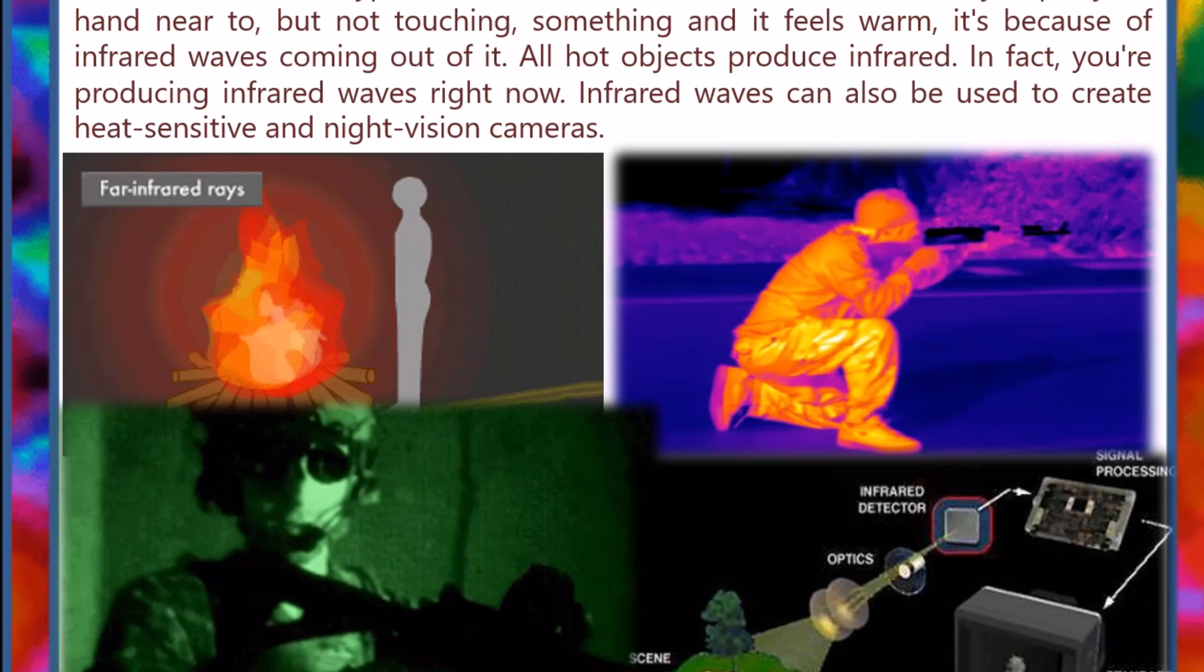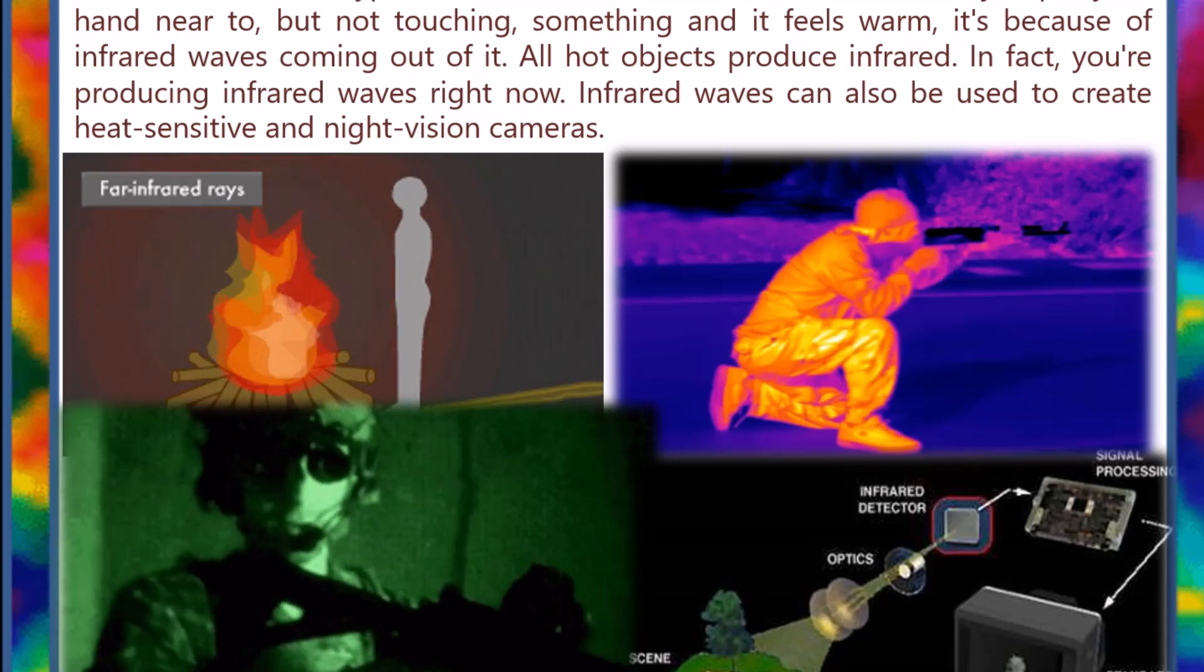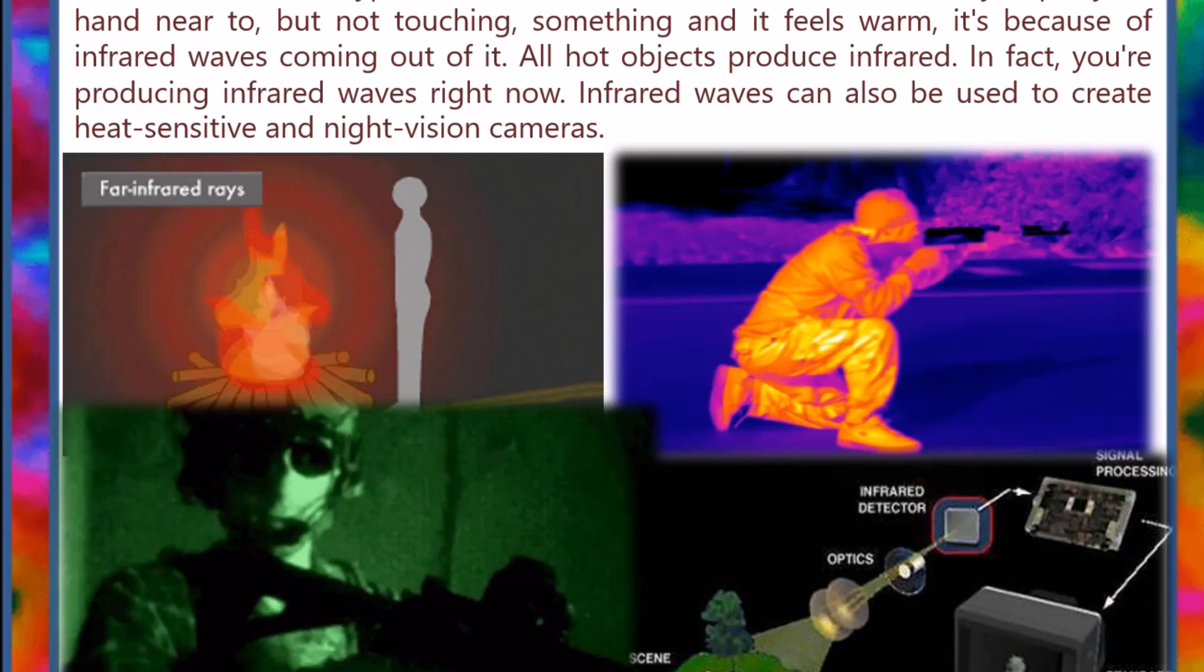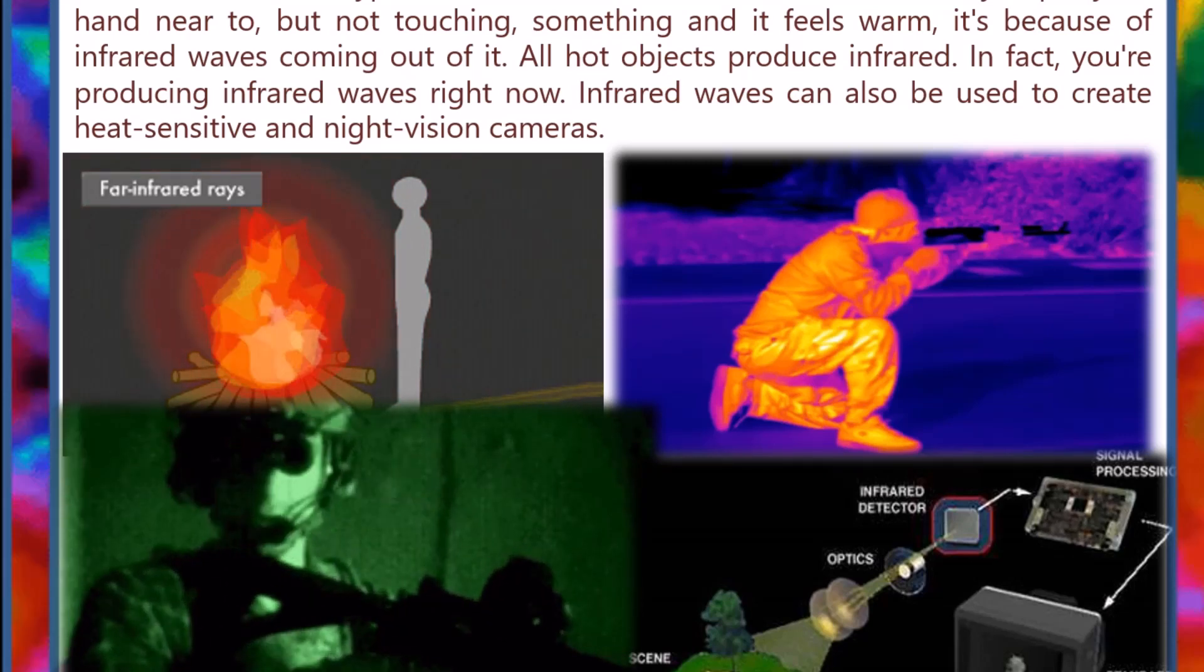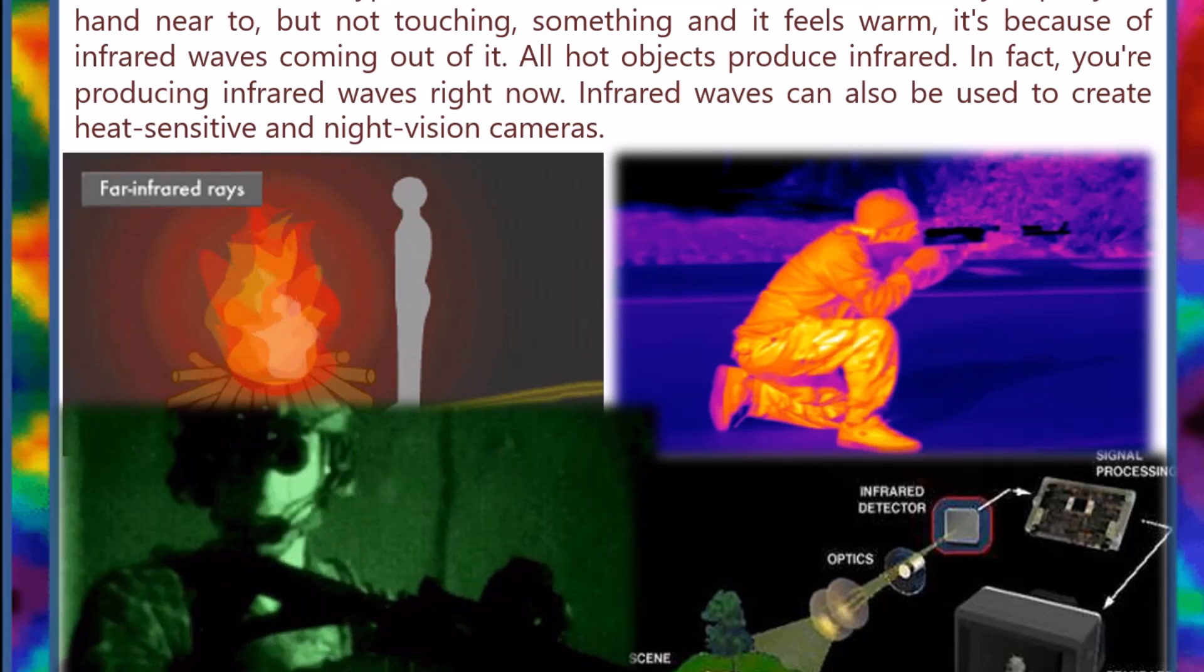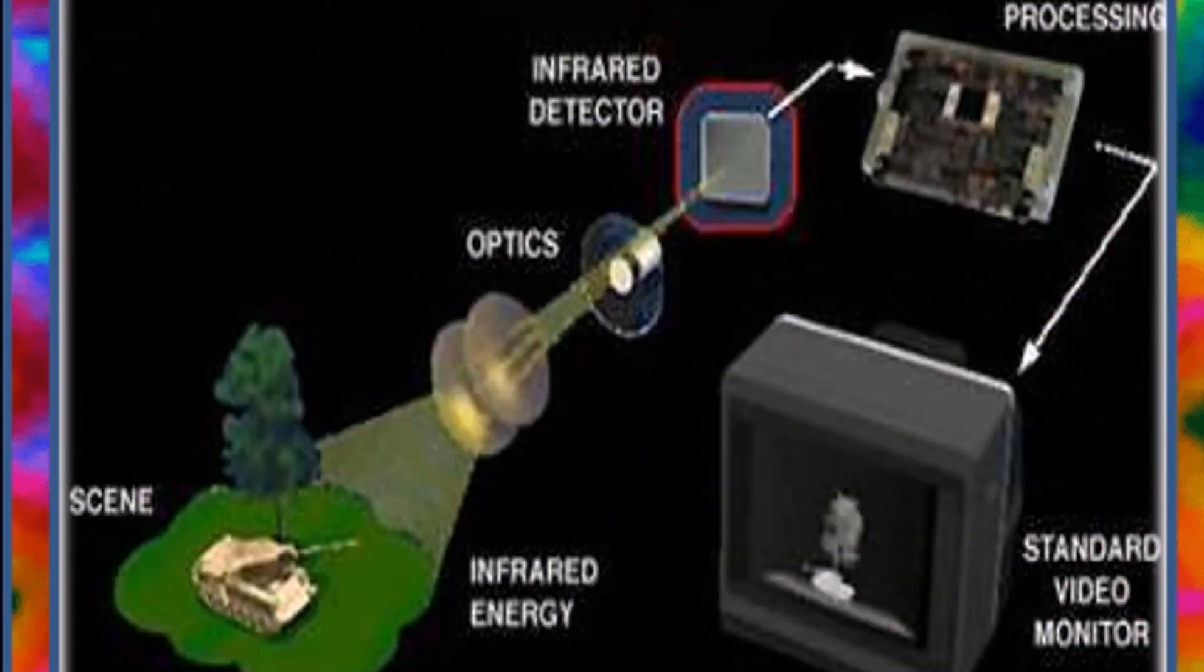Infrared waves are what comes out of remote controls. Infrared is also a type of wave that transmits a lot of heat. When you put your hand near to, but not touching, something and it feels warm, it's because of infrared waves coming out of it. All hot objects produce infrared.